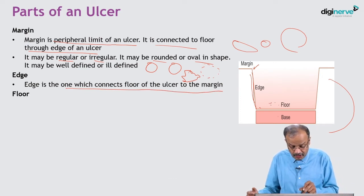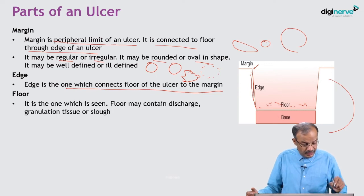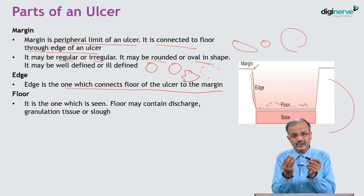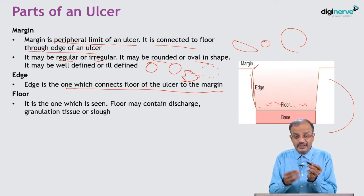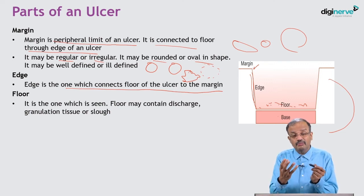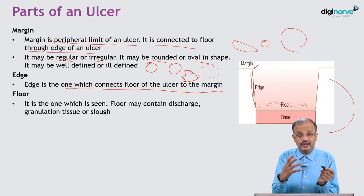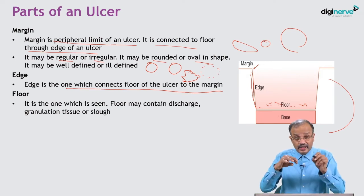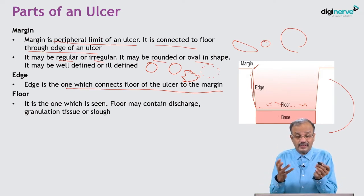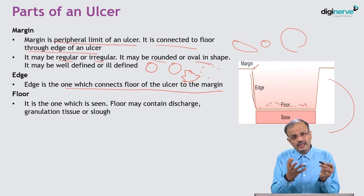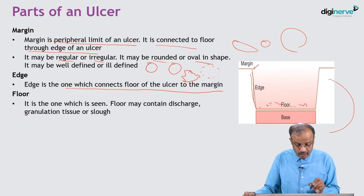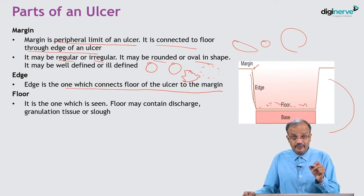The floor is what you see when you look at the ulcer. The floor may contain discharge, granulation tissue, or slough. Slough is a yellow, thick material. Discharge may be serous or blood. Granulation tissue is very red because it is a healing ulcer - healthy granulation tissue will be present. It may still be non-healing, in which case the granulation tissue will be unhealthy - red, pink, or white patches. That is what you look for in the floor; it is visible and can also be palpated.